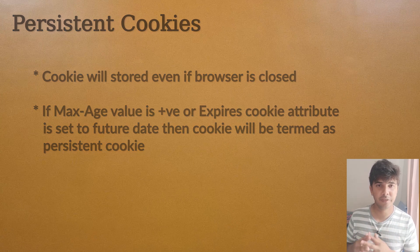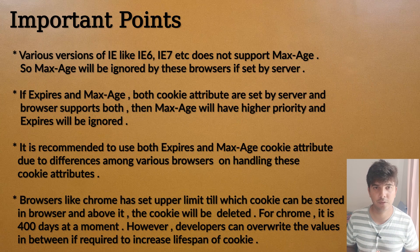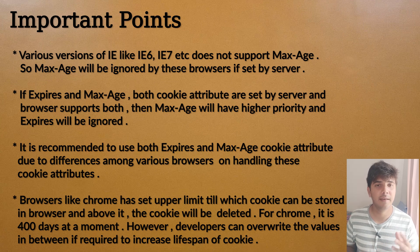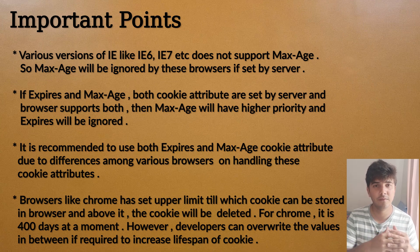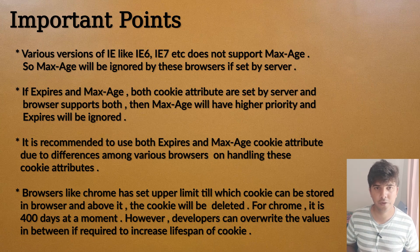There are some important points you should know when dealing with the max age or expires cookie attribute. The first point is that various versions of Internet Explorer — like IE6, IE7, or IE8 — have discarded the use of the max age cookie attribute, so that attribute will be neglected. Now if a browser supports both max age and expires, then max age will have higher priority and expires will be ignored.